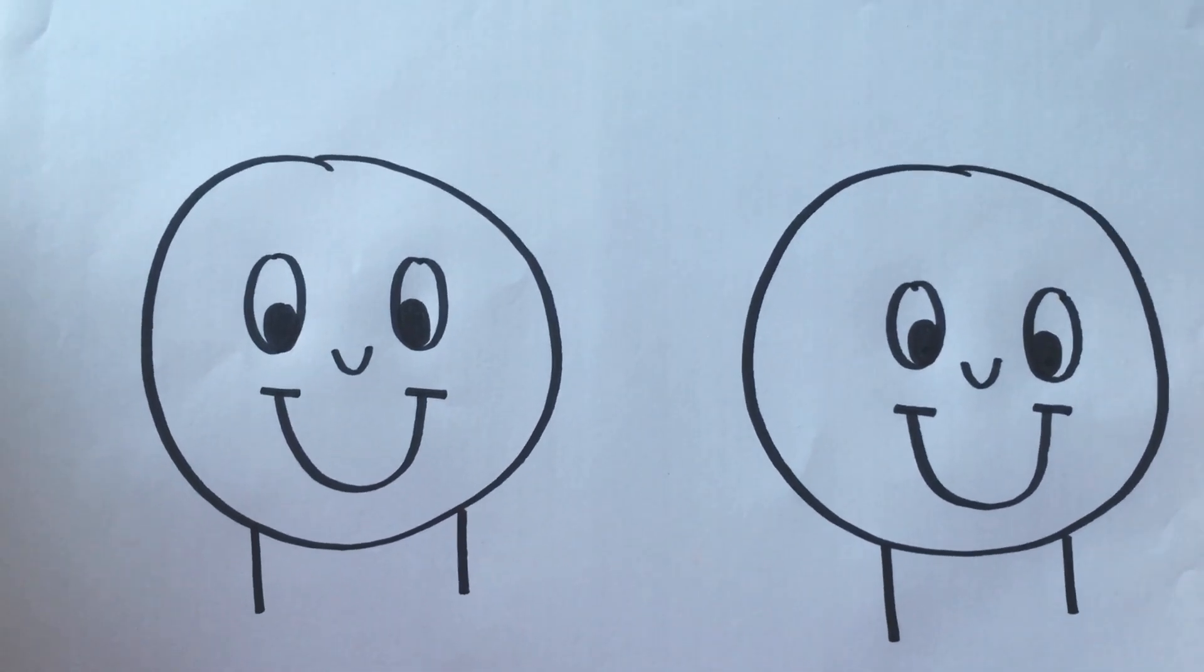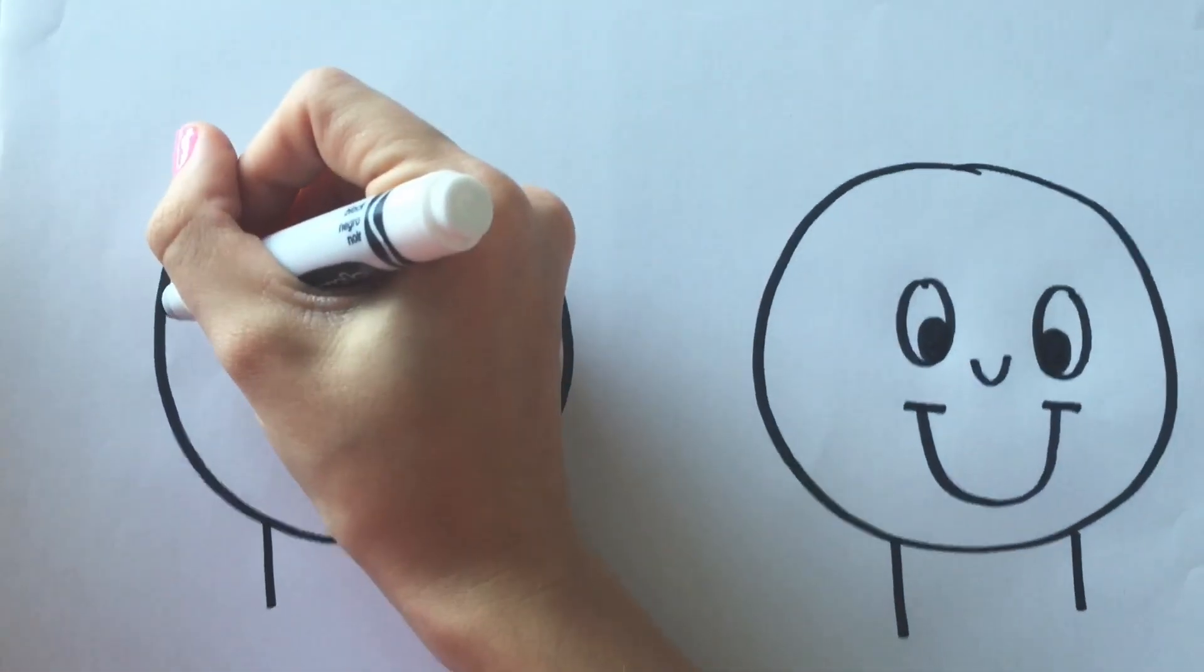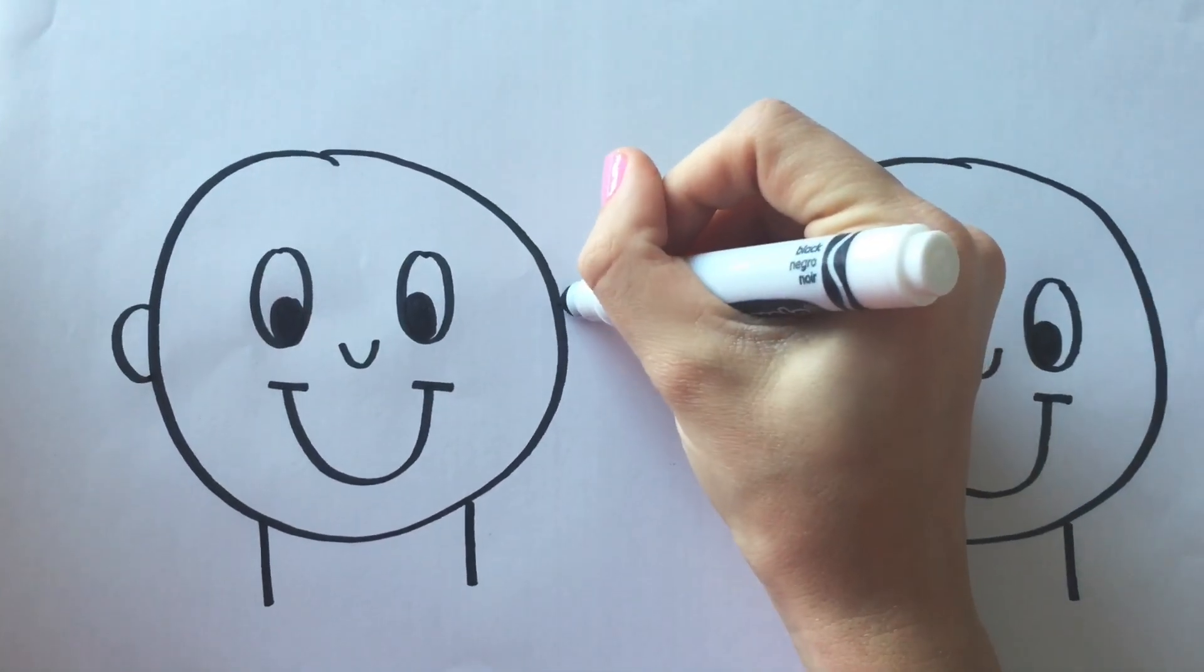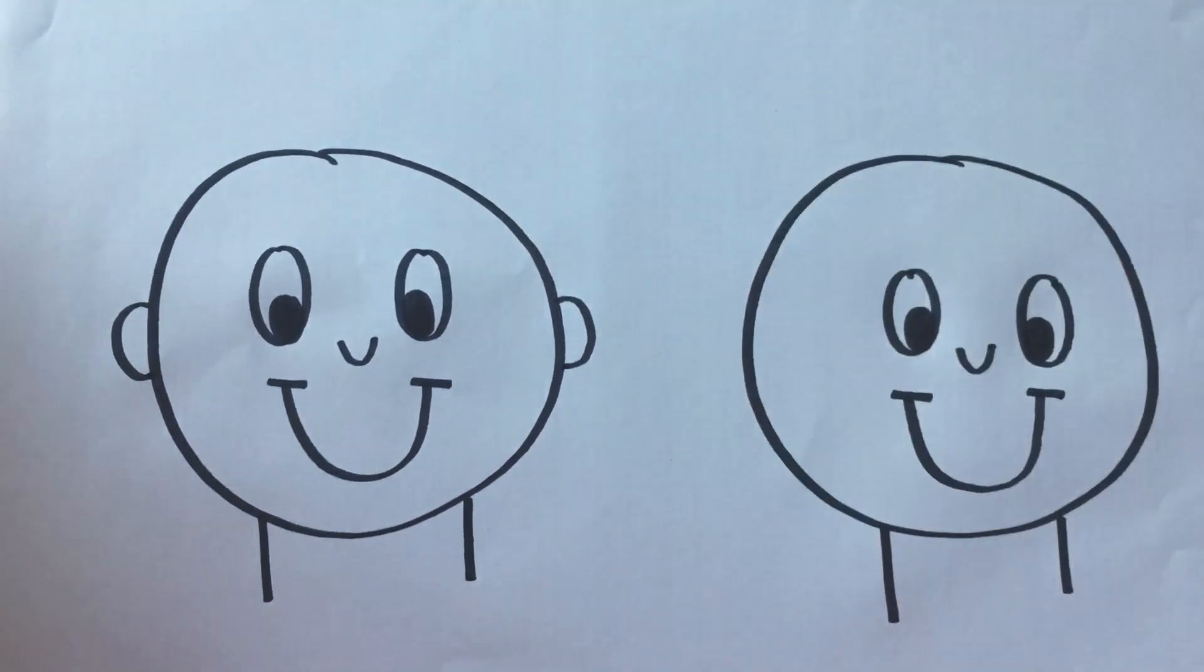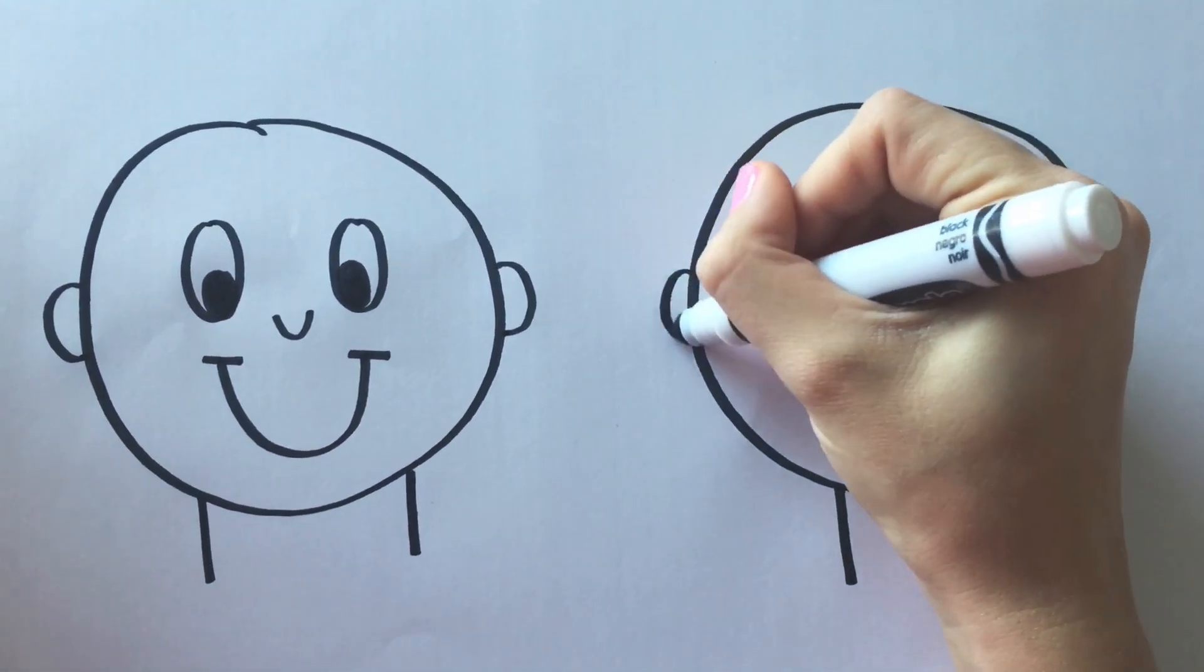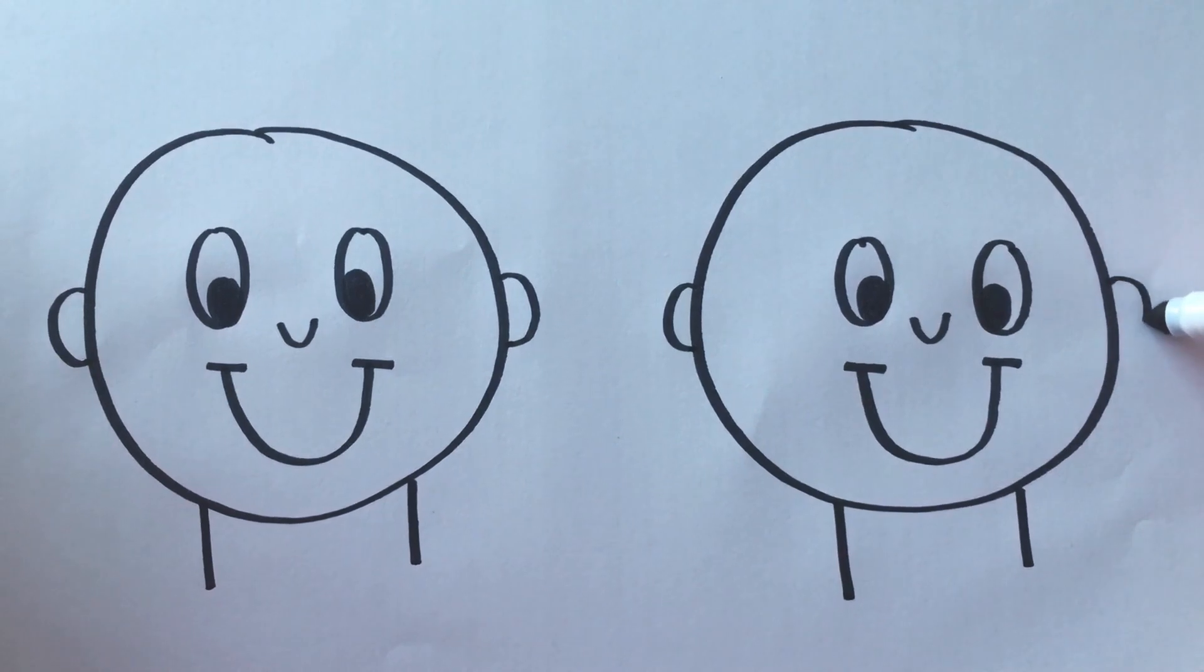Now I think our little person is missing some ears. So we draw a little semicircle here. And another semicircle here to make the ears. We'll do the same on this side. And there we go.